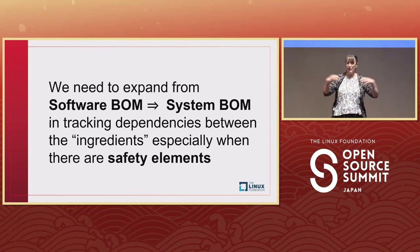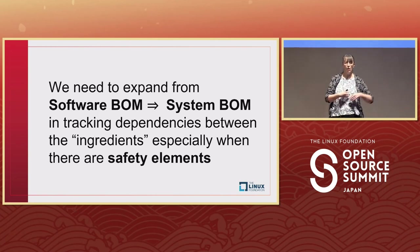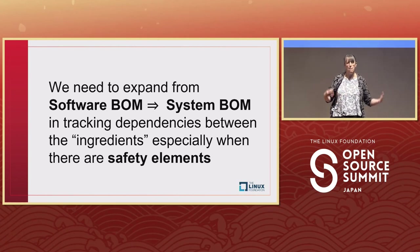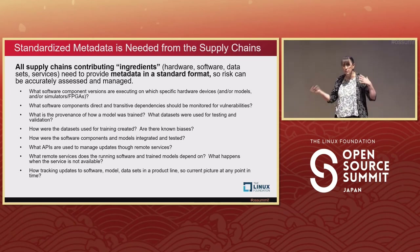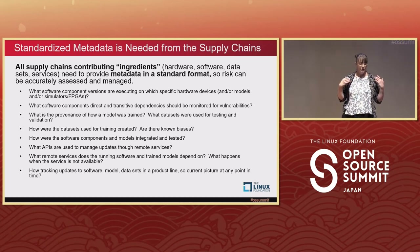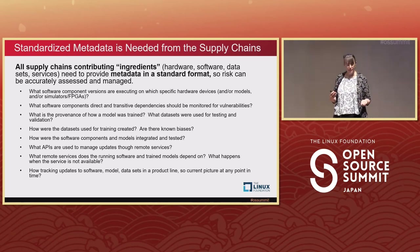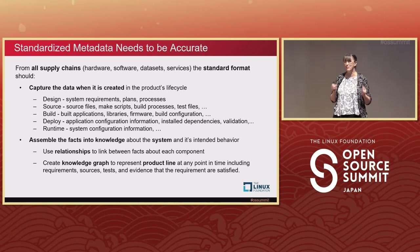How can we get all that information together and expand from a software bill of materials to a true system bill of materials? We've had hardware BOMs forever, and we've been adding software BOMs recently because of security. We really need to incorporate more ingredients so we can do safety analysis properly. To do this, we're going to need standardized metadata from all of the supply chains — from the hardware, the software, the data sets, this whole slew of data provenance, and from the services.